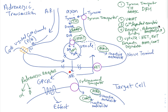Norepinephrine is released through the same calcium-dependent exocytosis process, but it binds adrenergic receptors rather than dopaminergic receptors. Adrenergic receptors are also all GPCRs, but they respond to norepinephrine and are of the alpha and beta subtypes. Norepinephrine is removed from the junction through a norepinephrine reuptake transporter, not DAT, and MAO can metabolize norepinephrine because it is also a monoamine.